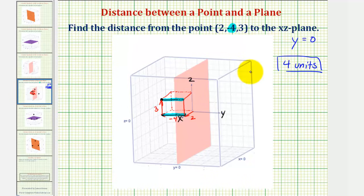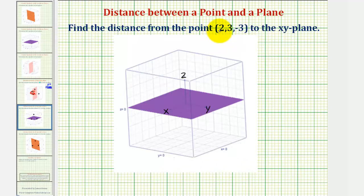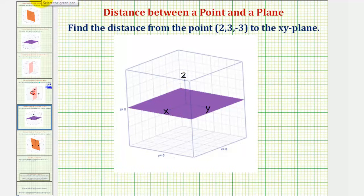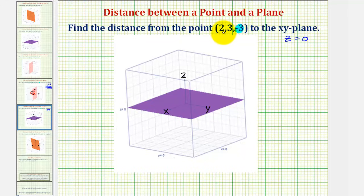Let's take a look at another example. Here we want to determine the distance from the point (2, 3, -3) to the xy plane. Notice how any point in this plane has x and y coordinates that can be any real number, but the z coordinate would have to be zero. Therefore, if we recognize the equation of the xy plane is z = 0, we can determine the distance from this point to the xy plane by analyzing just the z coordinate. The z coordinate is negative three, so this point would be three units below the plane z = 0.